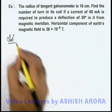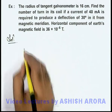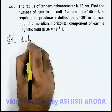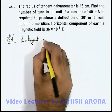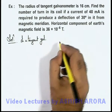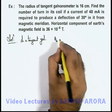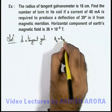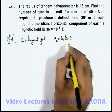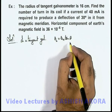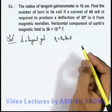In this situation, as we know in a tangent galvanometer, the magnetic field due to the coil can be written as Bc = Bh tan θ, where θ is the angle of deflection of the magnetic needle from the magnetic meridian.